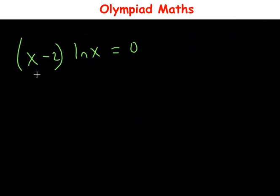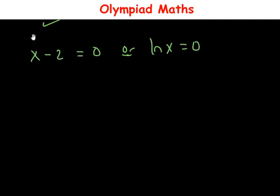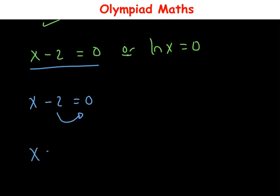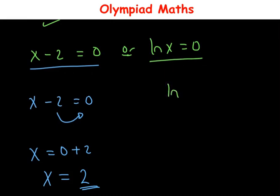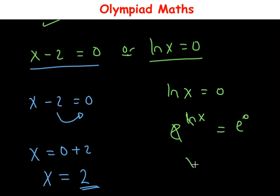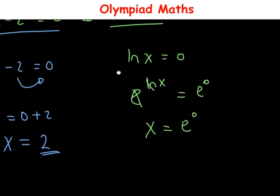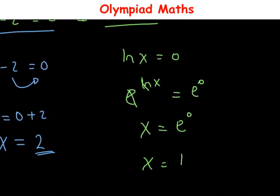We can equate each factor to zero: x minus 2 equals 0, or ln(x) equals 0. Solving the first equation, x equals 2. For the second, ln(x) equals 0, so we raise e to both sides: e raised to power ln(x) equals e raised to power 0. Cancelling the ln, x equals e raised to power 0, which equals 1.